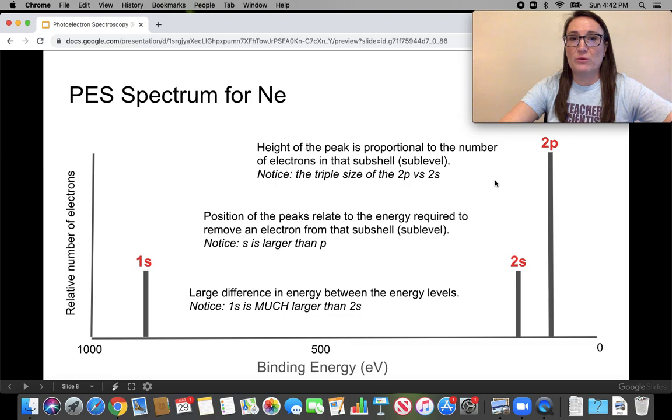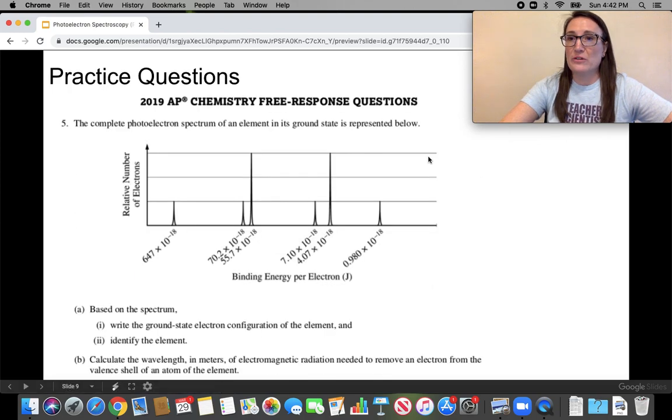So what would happen if you had an unknown element? So I found a question that we can do. It's from the 2019 released exam. You can get your hands on this by just looking it up on the internet. Preferably don't do that first. Go through and try to answer it yourself. So the first thing is take a look at your axes. This one's in joules. Look at the numbers.